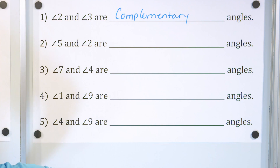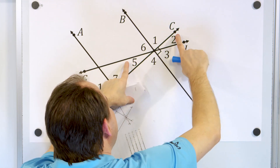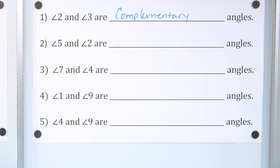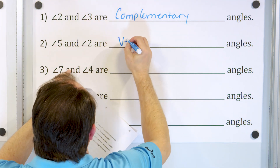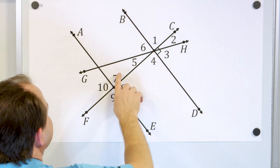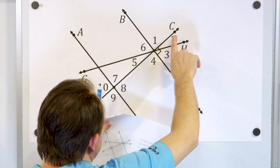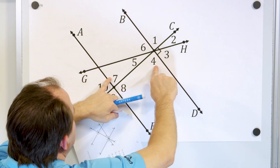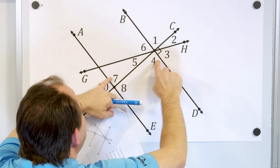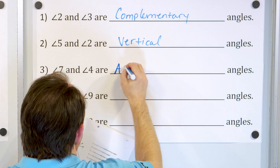Angle five and angle two — they have a line here and a line here, and the opposite angles are called vertical angles. Vertical angles are always the same measure, so angle five and angle two are vertical angles. Angle seven and angle four — cutting through the drawing, this is a single transversal cutting two parallel lines. Angle seven and angle four are on alternate sides of the transversal and are interior, so they're alternate interior angles.